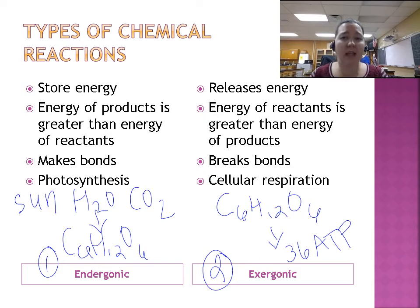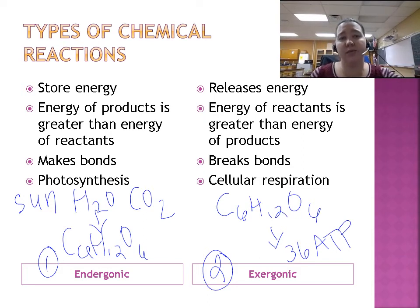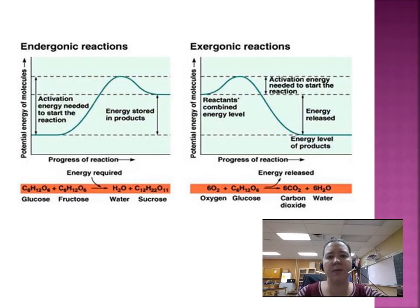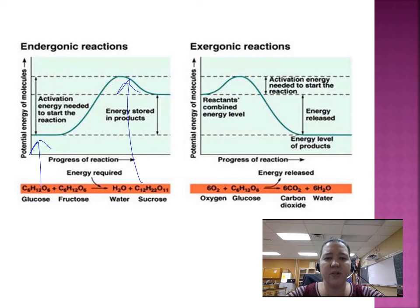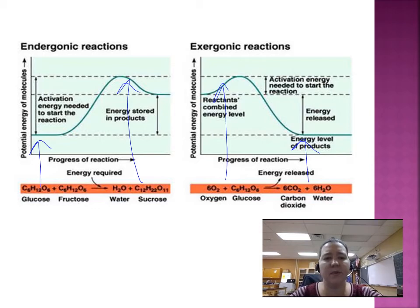Any one molecule of ATP has way less energy than one molecule of glucose. Here is a visual representation: in endergonic reactions we start with low energy and end with higher energy in the product; in exergonic reactions we start with lots of energy and end with a lot less energy in the product. If you're a visual person, that's very helpful.